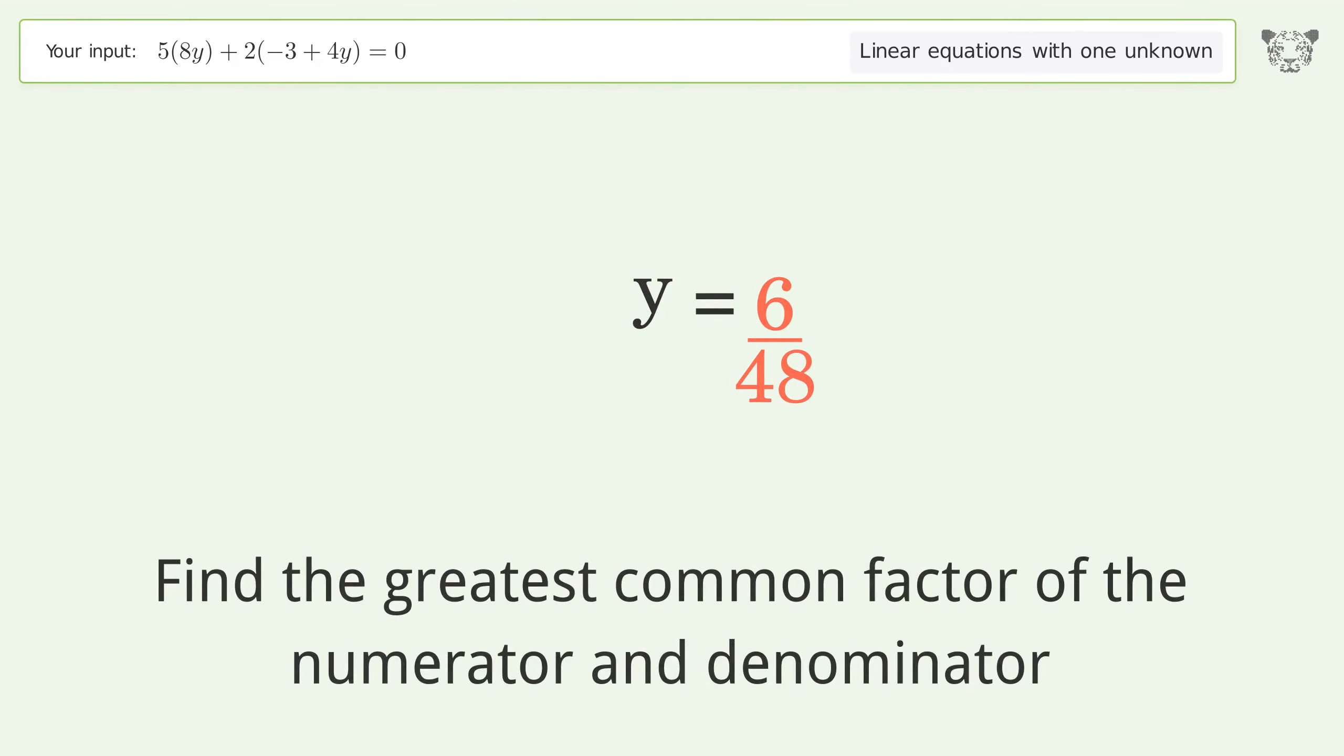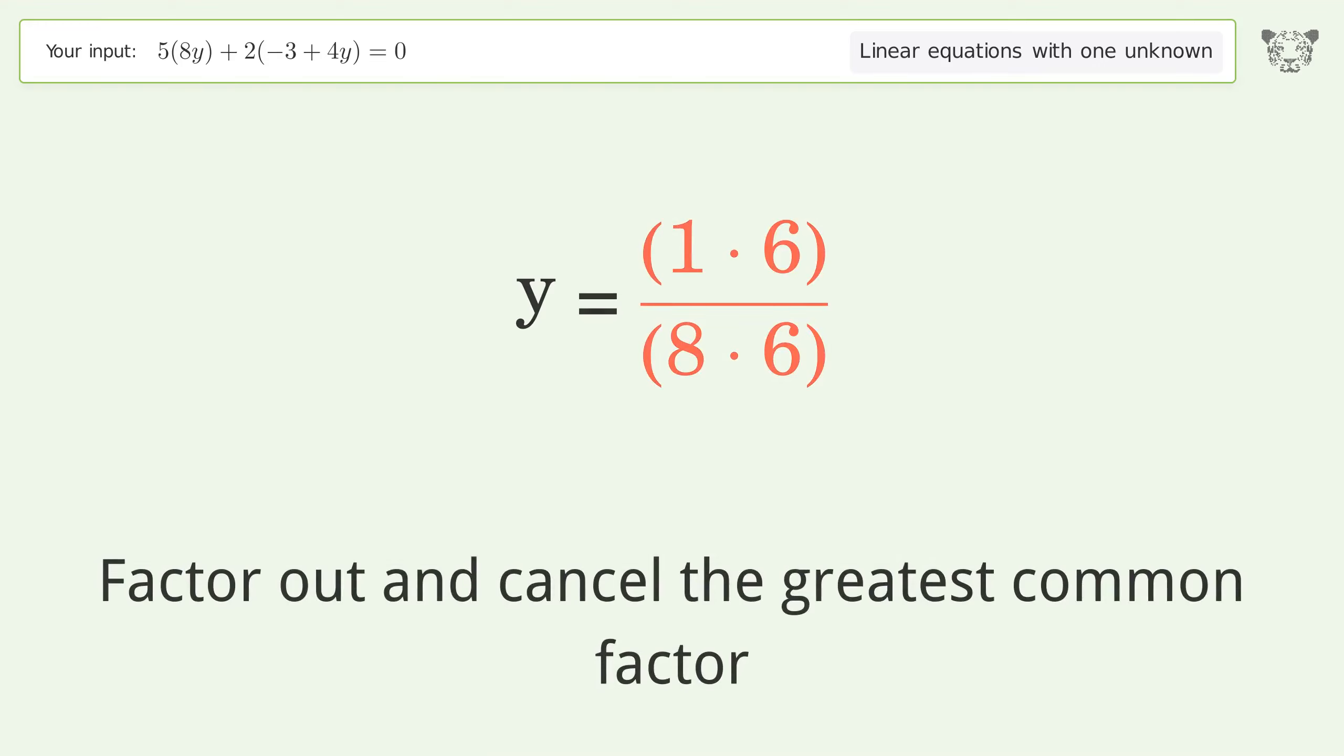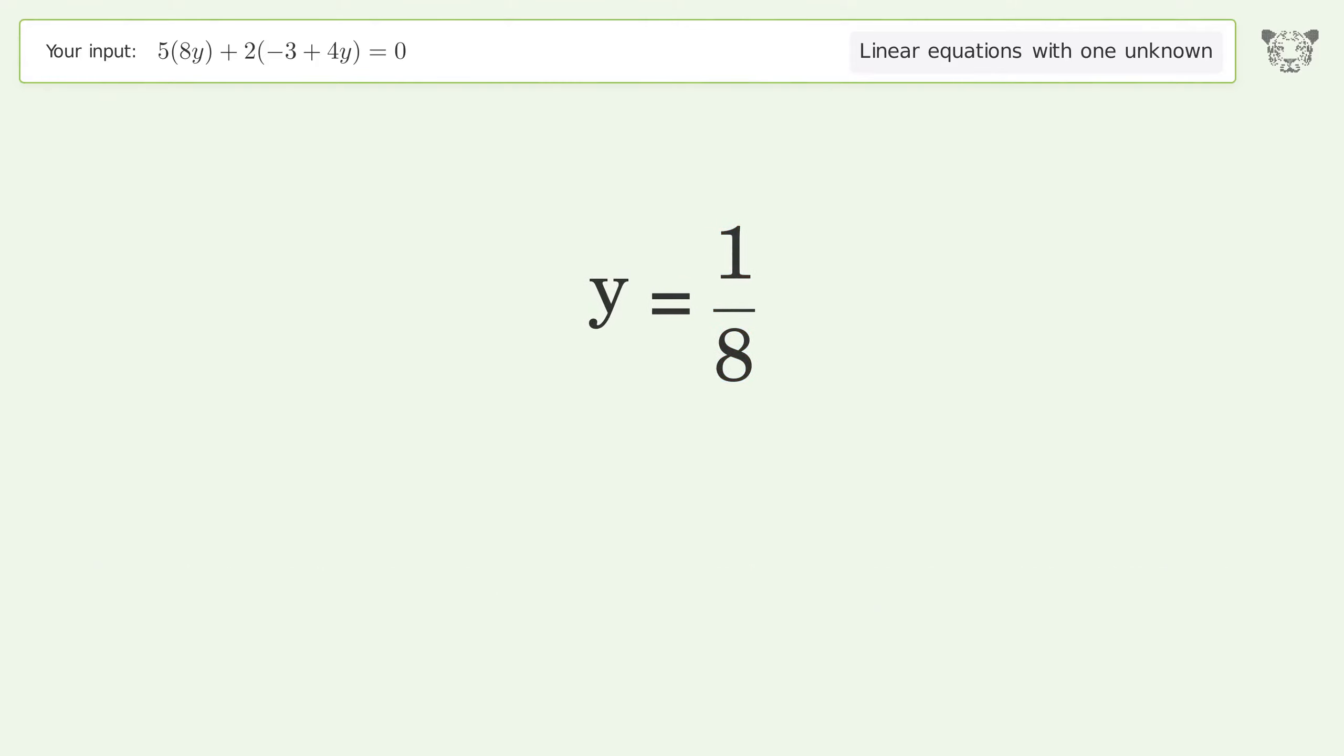Find the greatest common factor of the numerator and denominator. Factor out and cancel the greatest common factor. And so the final result is y equals 1 over 8.